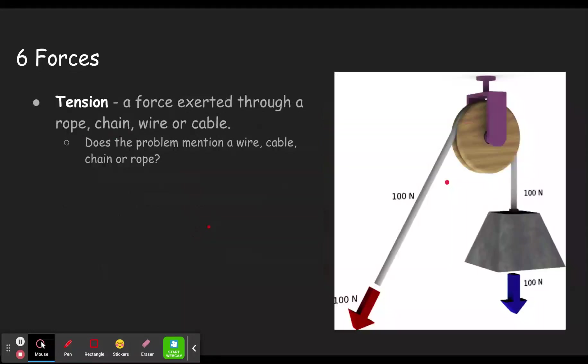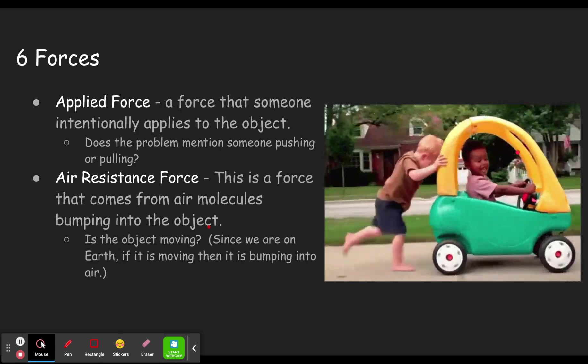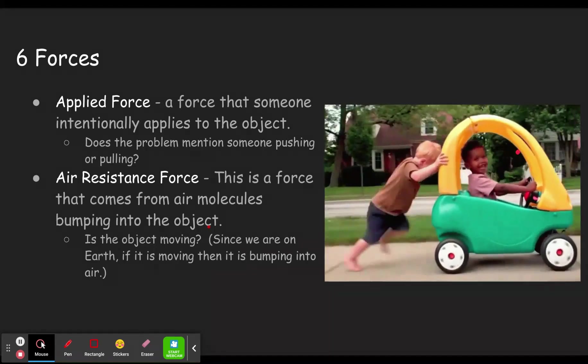In our last example, the person down here pulling on the rope is not applying a force to this, the tension is putting the force on this. And there are some questions like that. So if you see somebody pulling on a rope, the tension is pulling on the thing, not the person. That's how they signify it on physicsclassroom.com.